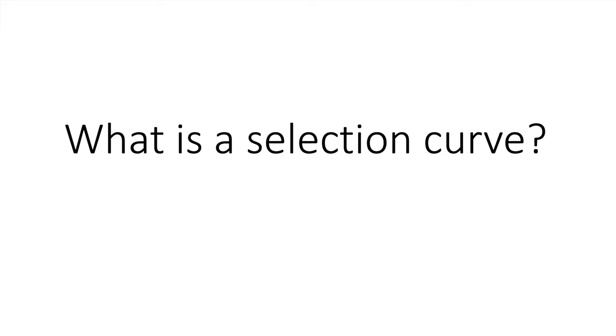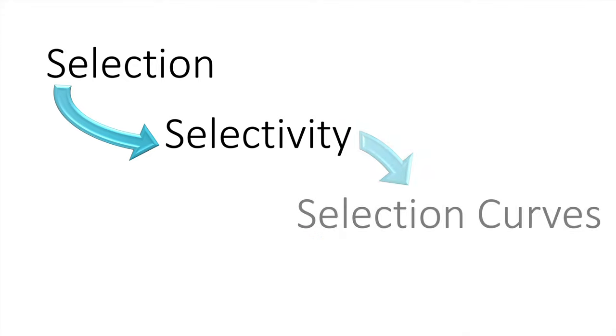Hello, this is a short video explaining what selection curves are and why they are used in fishery science. We know that selection is any process that results in differences in the probability of a fish being captured, and that selectivity is the expression of this as a numerical probability. Therefore, a selection curve is a graphical representation of this probability.